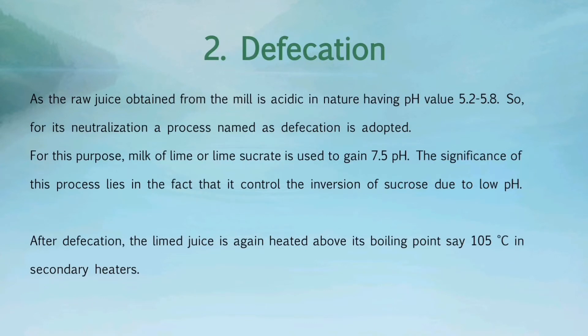The second process is defecation. As the raw juice obtained from the mill is acidic in nature having a pH value of 5.2 to 5.8, for its neutralization a process named as defecation is adopted. For this purpose, milk of lime or lime sucrate is used to achieve 7.5 pH. The significance of this process lies in the fact that it controls the inversion of sucrose due to low pH. After defecation, the limed juice is again heated above its boiling point, say 105 degrees Celsius, in secondary heaters.